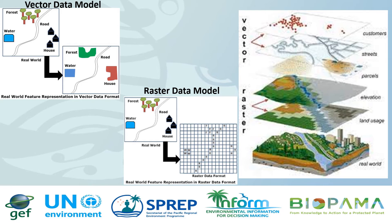There are three vector types in the vector data model, and each of them is represented differently. Points are used to model single discrete features such as buildings, trees, and power poles. Lines are used to represent linear features such as roads and streams. Polygons are used to represent features such as city boundaries, geologic formations, lakes, soil, and land use.